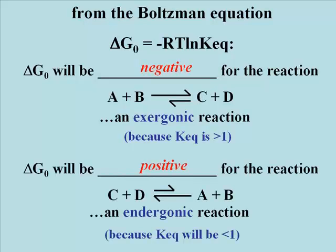By the same token, the reverse reaction — C plus D going to A plus B — must be endergonic, or energetically unfavorable in a closed system under standard conditions. The equilibrium constant for an endergonic reaction will by definition be less than 1. The natural log of a number less than 1 will be negative, so minus R times T times the natural log of Keq — a negative number — will be positive.